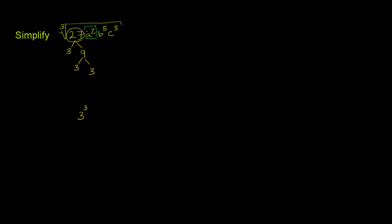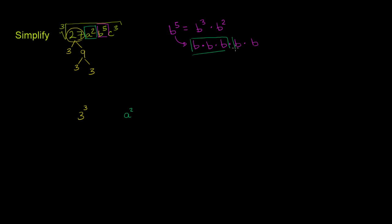Then you have a squared — clearly not a perfect cube; a to the third would have been. So we'll write a squared over here. B to the fifth is not a perfect cube by itself, but it can be expressed as a product of a perfect cube and another thing. B to the fifth is the exact same thing as b to the third power times b to the second power. So the first three b's are clearly b to the third power, and then you have b to the second power after it. So I'll write b to the third over here, and then b squared over here.